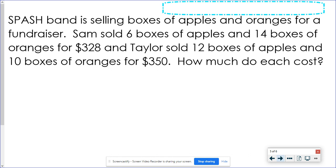One more. SPASH band usually does have a fundraiser and they sell fruit. So we're selling boxes of apples and boxes of oranges. Sam sold 6 boxes of apples and 14 boxes of oranges, $328. Taylor sold 12 boxes of apples and 10 boxes of oranges, $350. So let's take a look at these equations. Let's use A for apples and R for oranges. So we've got 6 boxes of apples and 14 boxes of oranges, $328. Taylor has 12 boxes of apples and 10 boxes of oranges and that's $350.